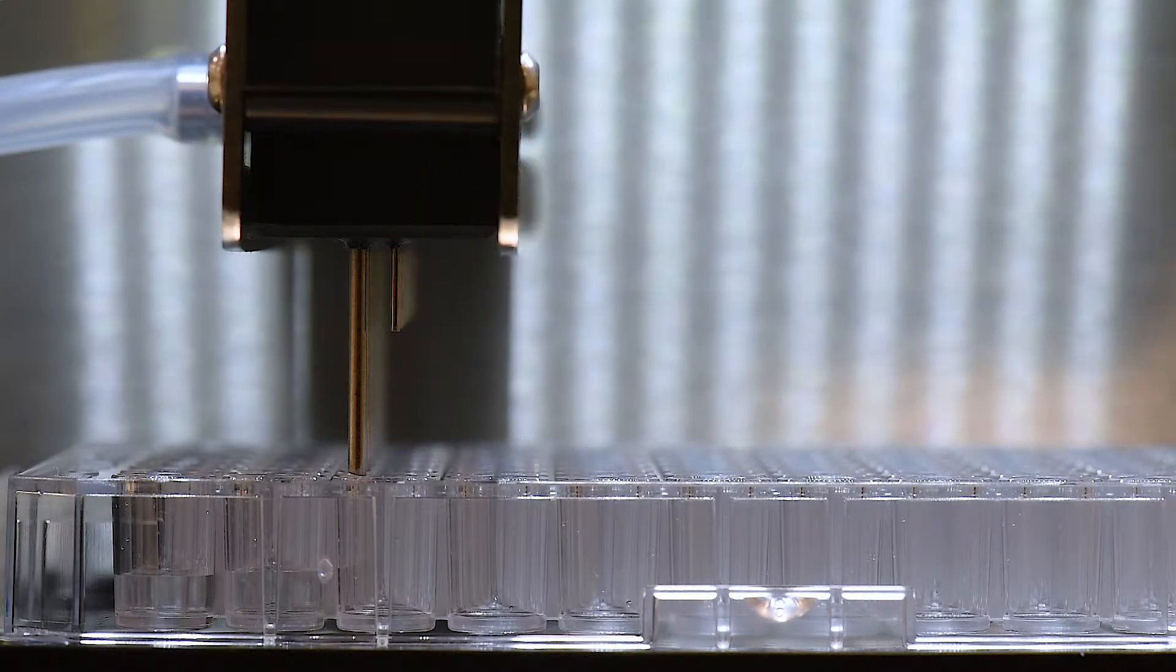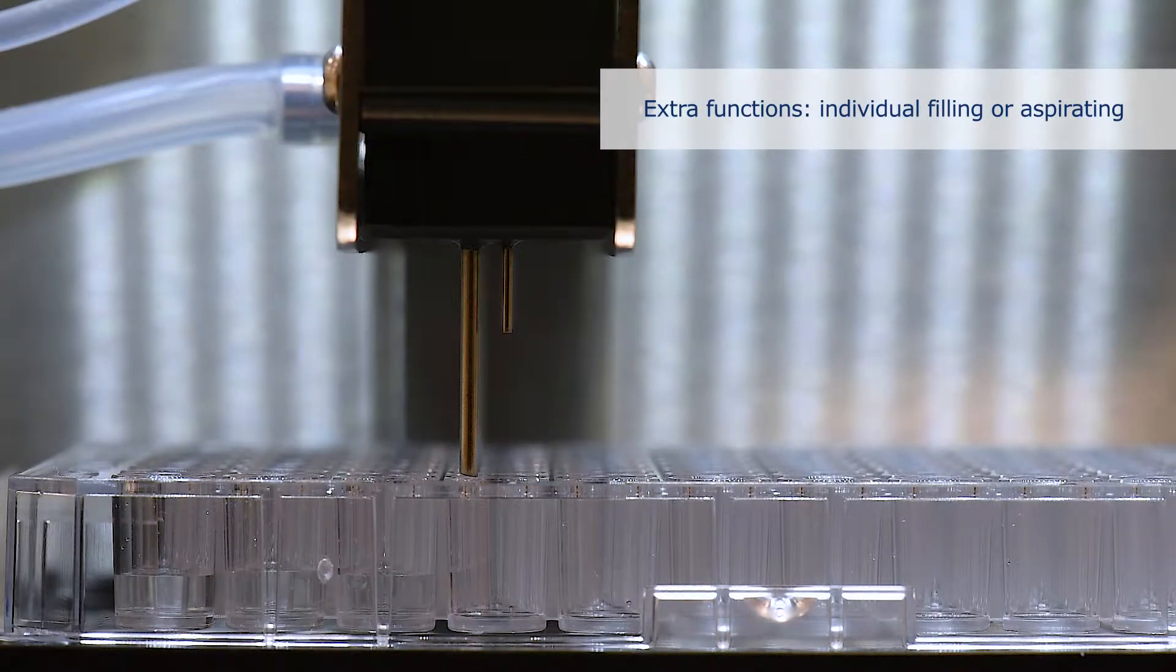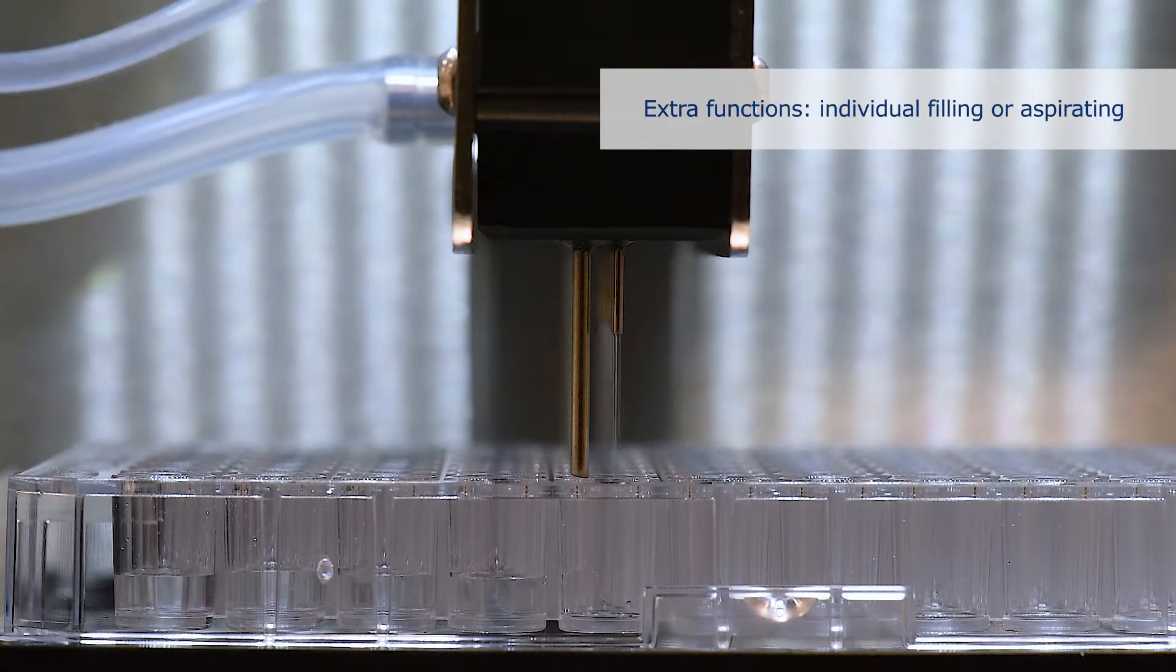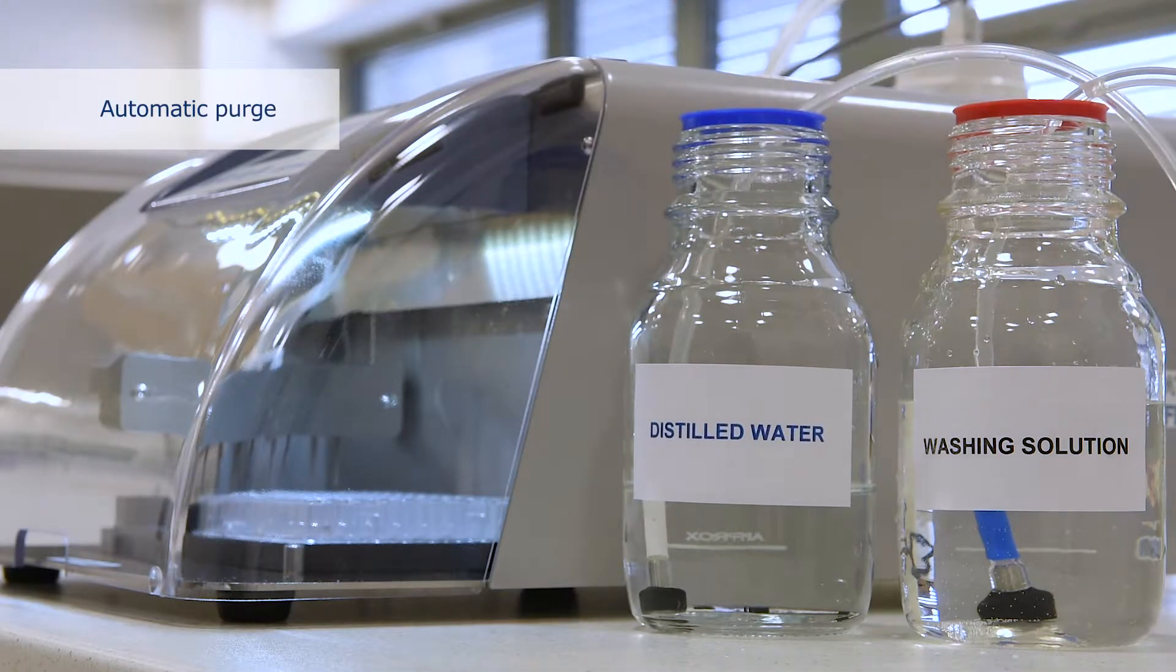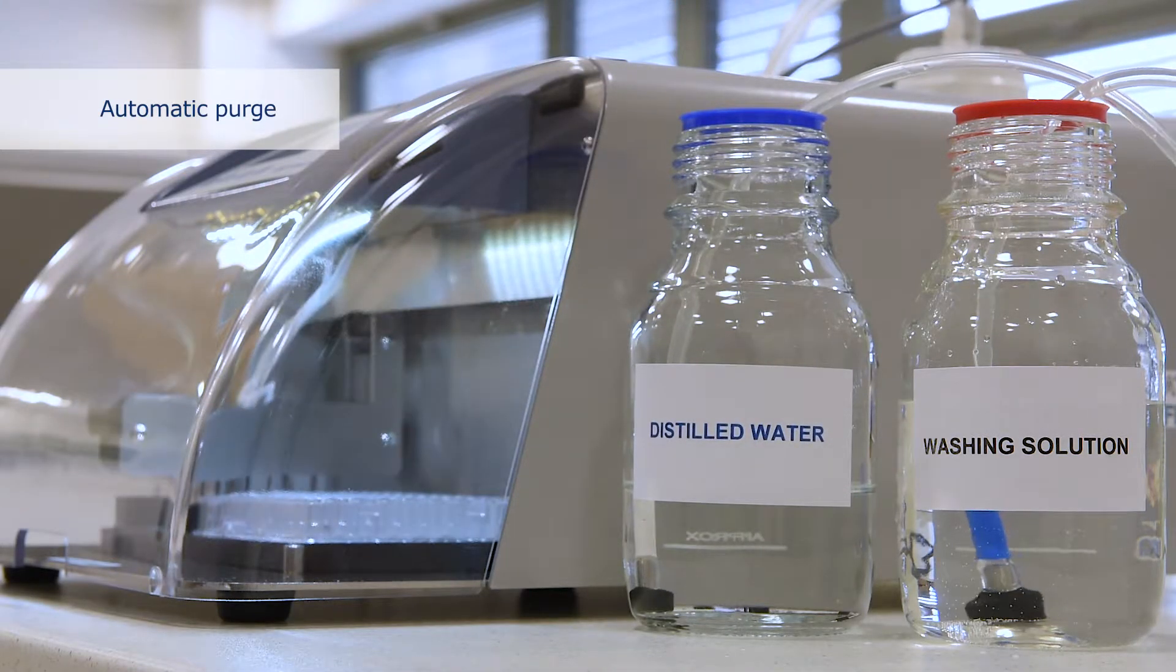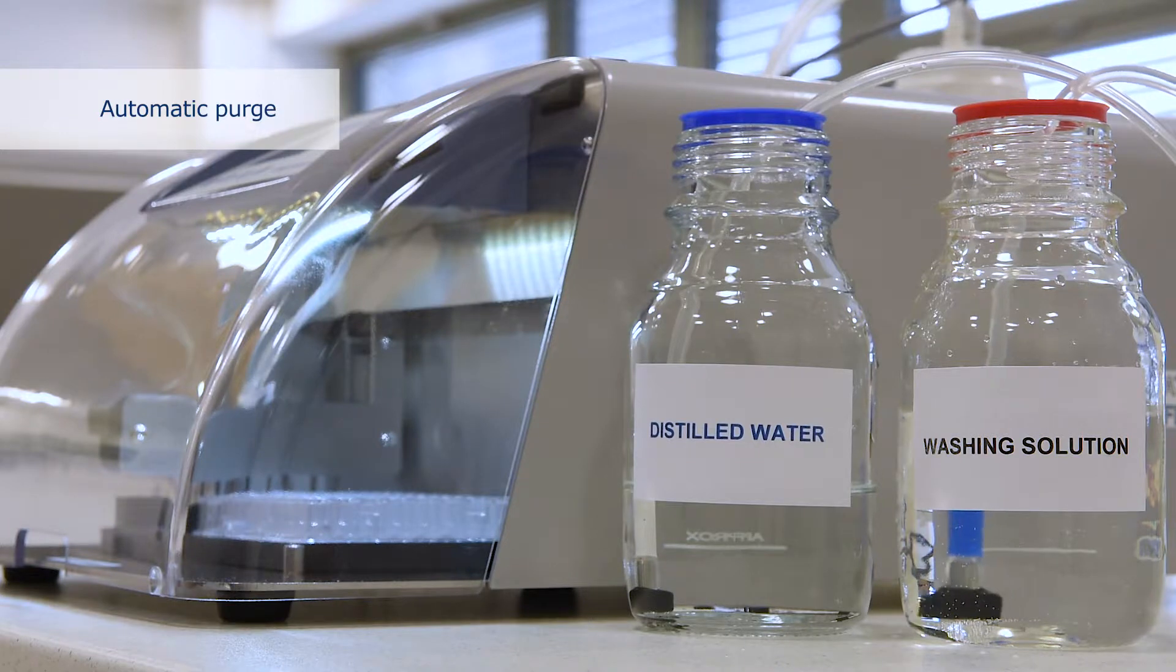The DynaWash Automatic can be used for a separated function of filling and aspirating. If the user connects distilled water to the washer, then the automatic purge can be performed after each washing procedure.